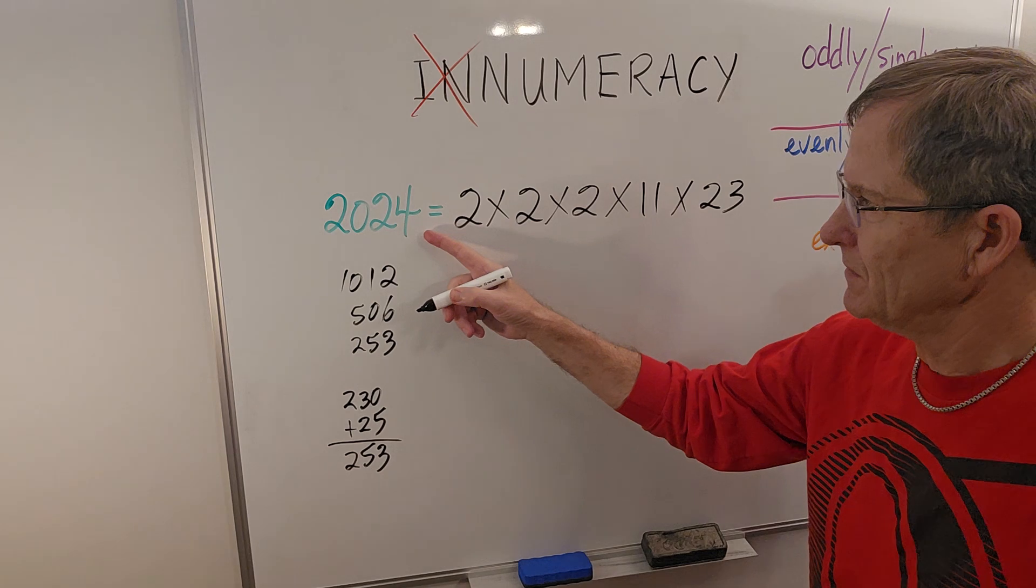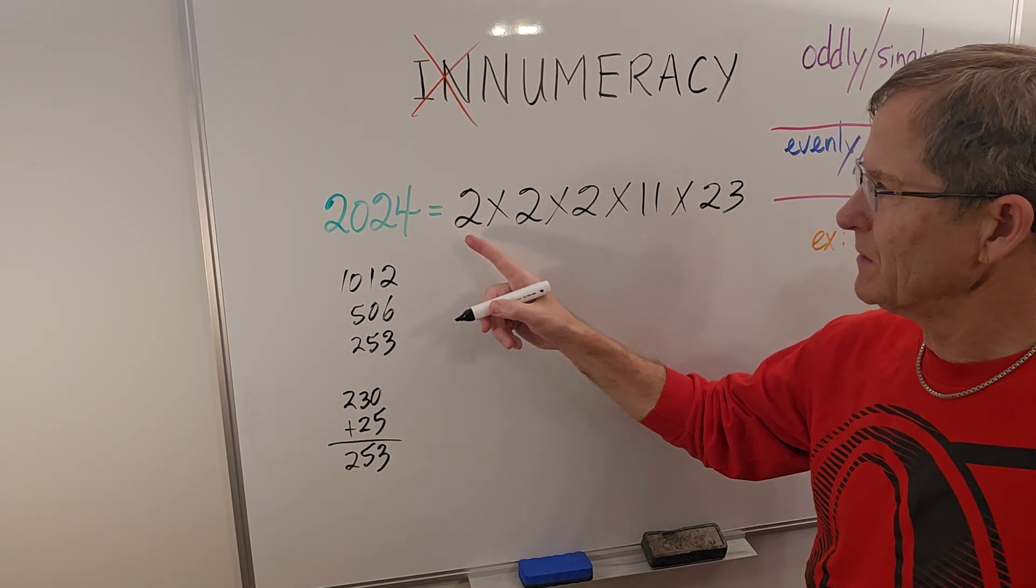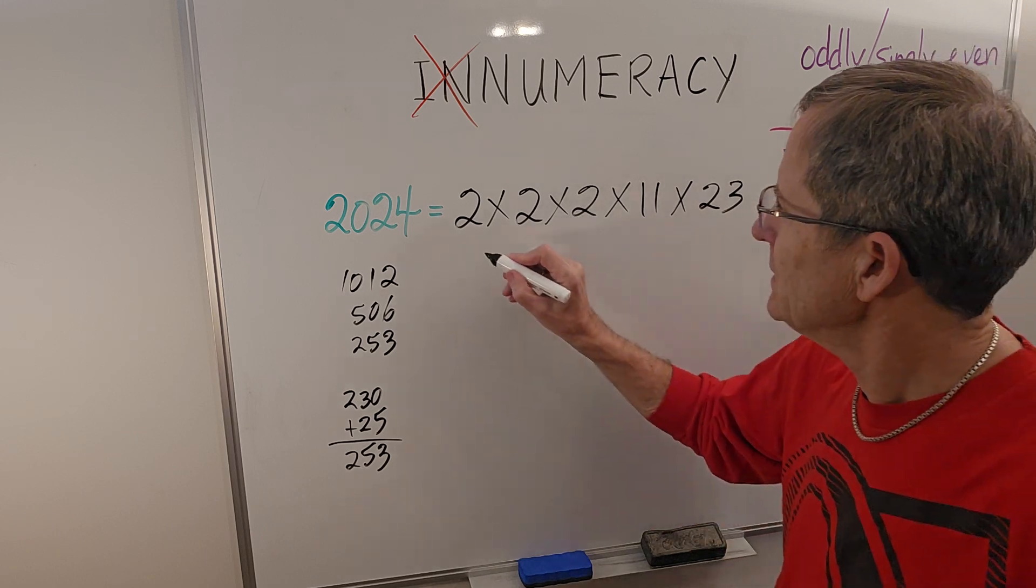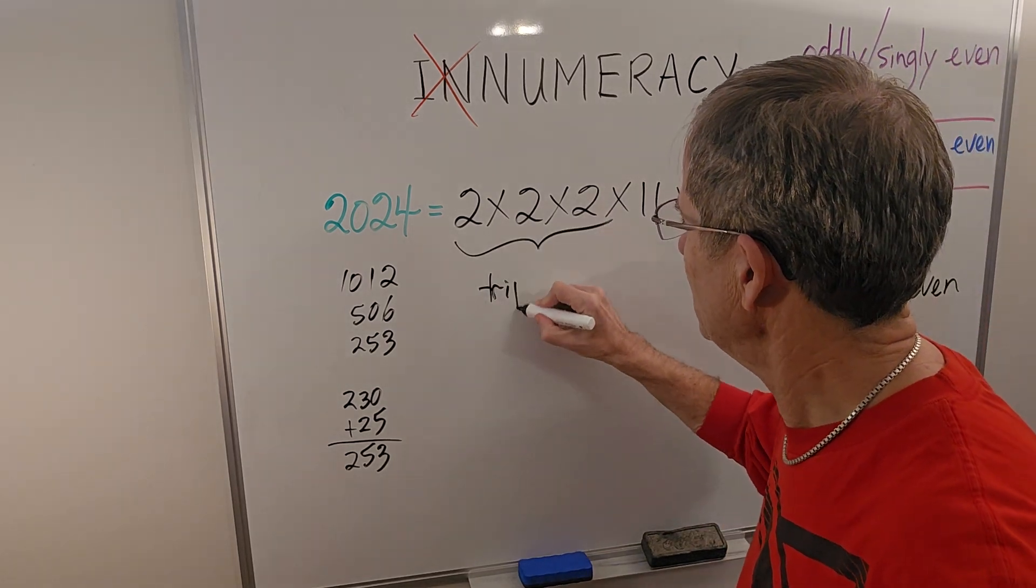So the number, or the year 2024, can be factored as two times two times two times 11 times 23. Some people say this is triply even.